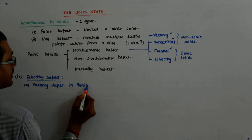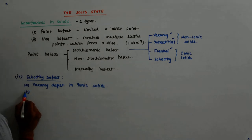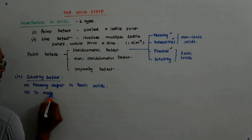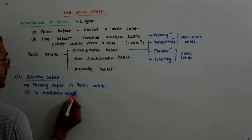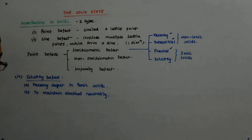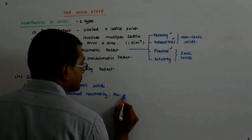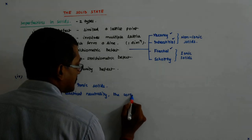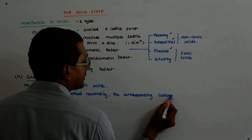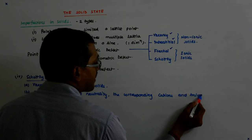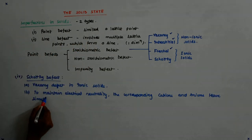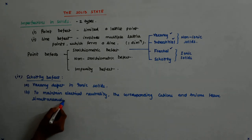And immediately we understand two things. The first is that to maintain the electrical neutrality, what happens? The corresponding cations and anions leave simultaneously.